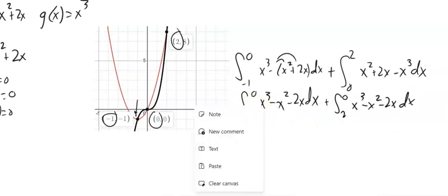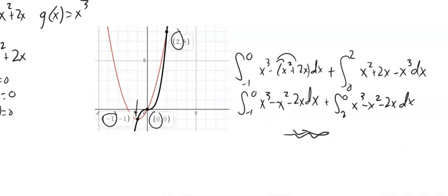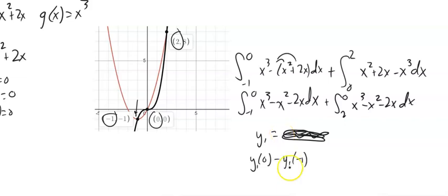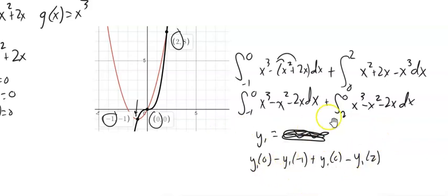When evaluating, if you let Y1 equal the antiderivative in your calculator, you can compute Y1(0) minus Y1(-1) for the first piece, then add Y1(0) minus Y1(2) for the second. You don't have to do two entirely different integrals — just a thing to think about to save yourself a little time and grief.